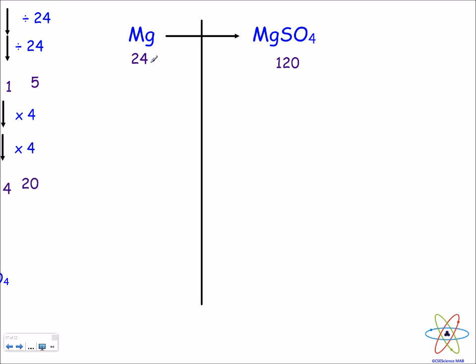We need to now convert this 24 grams into 1 gram. So how do we do that? We divide 24 by 24 and that gives us 1. To keep the ratio the same, we also divide 120 by 24, and that gives us 5. So now we have 1 gram of magnesium produces 5 grams of magnesium sulfate.